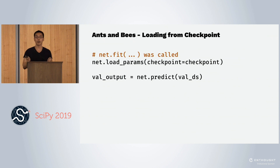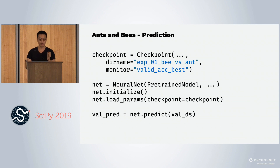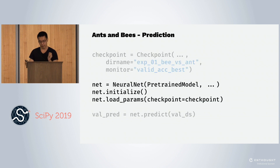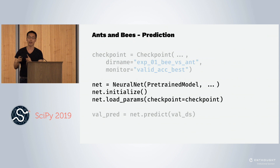Let's say you already fitted your model and saved everything in a checkpoint and now want to load it in another script. You use the same checkpoint object. You define the neural net like before, but in this case we have to call initialize, because the pre-trained model has not been instantiated yet. We call net.initialize, then load the parameters from the checkpoint, and then call predict.